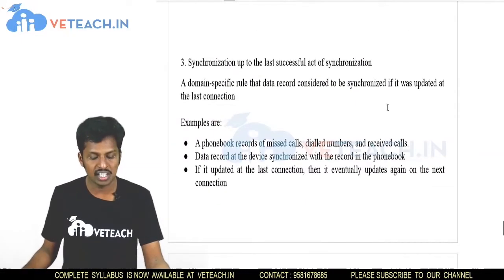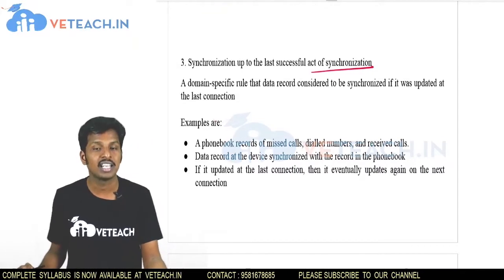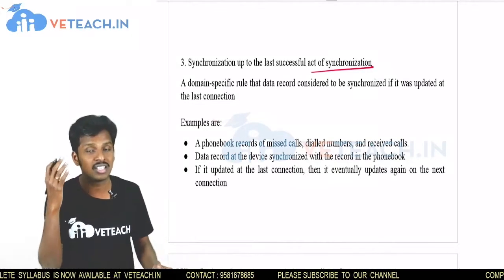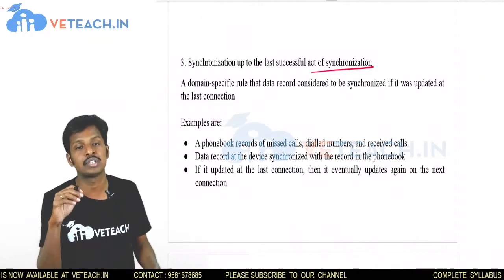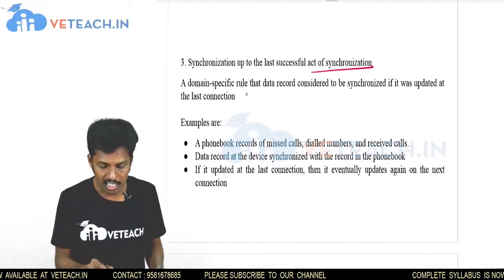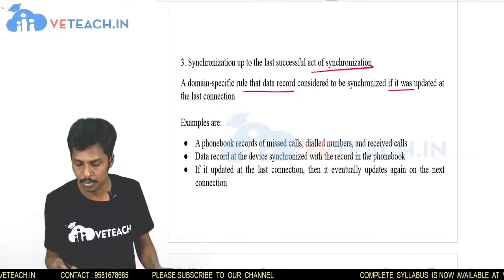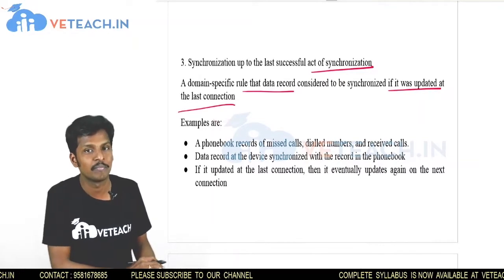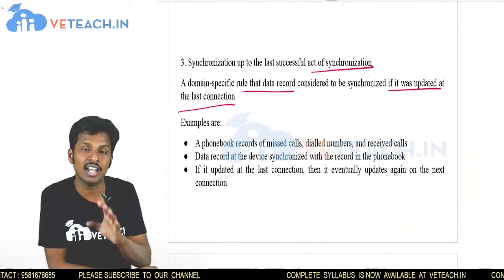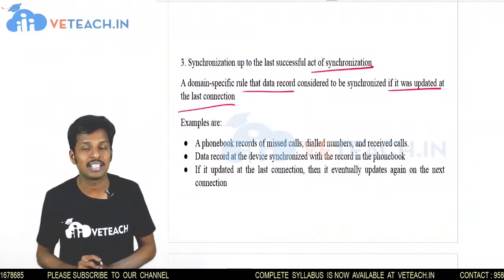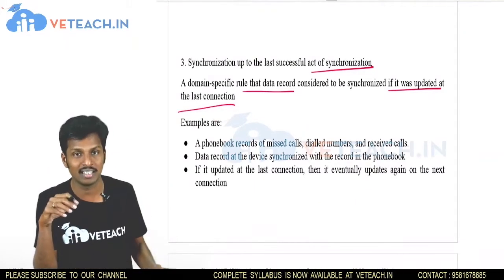The third type is synchronization up to the last successful act of synchronization. If there was a successful synchronization at an earlier stage, we must synchronize back to that position. The domain-specific rule states that a data record is considered synchronized if it was updated at the last connection. If the data is updated at time tj seconds after the last connection at time interval ti, we roll back to retrieve the previously updated data and then synchronize.